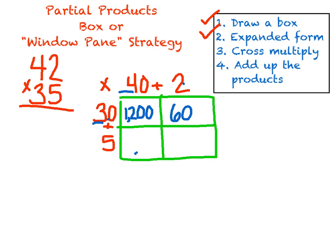Now I'm in this box right here. This box is going to be 40 times 5. 4 times 5 is 20, so I can write 20 right here. But I need 40 times 5, so that's got to be 200.